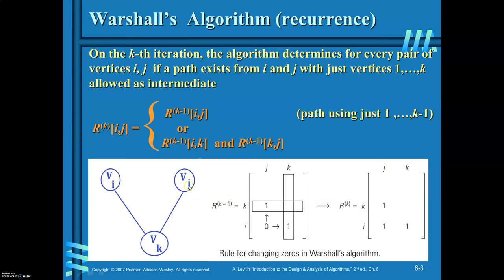The equation is R(k)IJ = R(k-1)IJ OR (R(k-1)IK AND R(k-1)KJ). If R(k-1)IJ is 0, but RIK is 1 and RKJ is 1, then 1 AND 1 is 1, so you can replace that 0 with 1. This is how you can change the matrix — whenever you introduce vertex K as the intermediate you box the Kth row and Kth column, and use this rule to update entries.